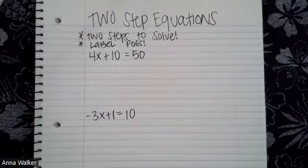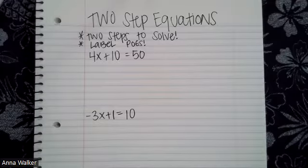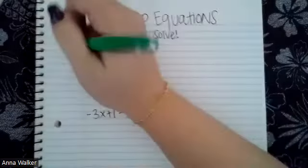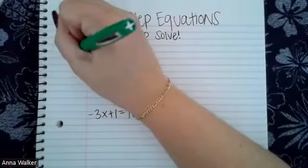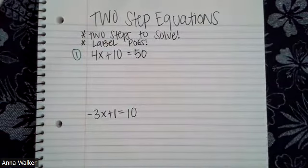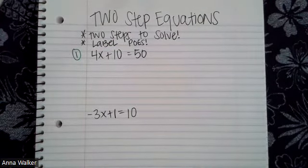So two-step equations, just like all the other kinds of equations, we're going to still follow the same three-step process. And we are also going to make sure we label the properties as we go. This is number one: we have four X plus 10 is equal to 50.